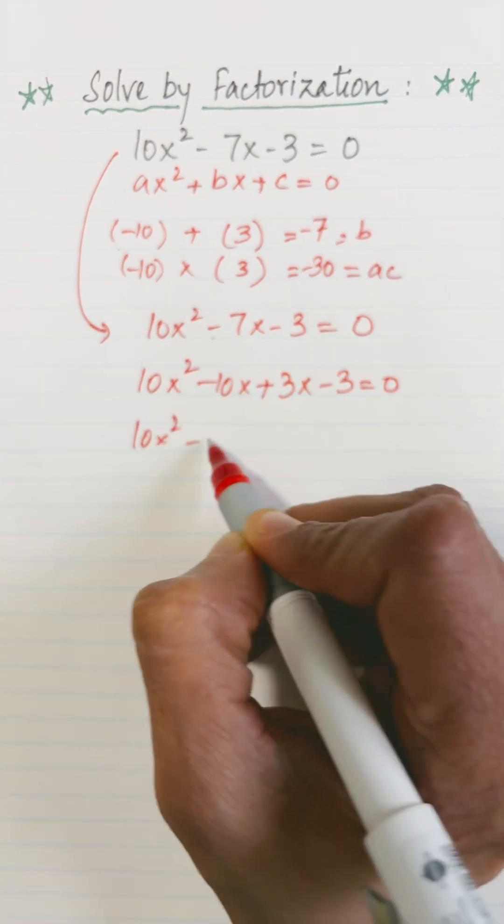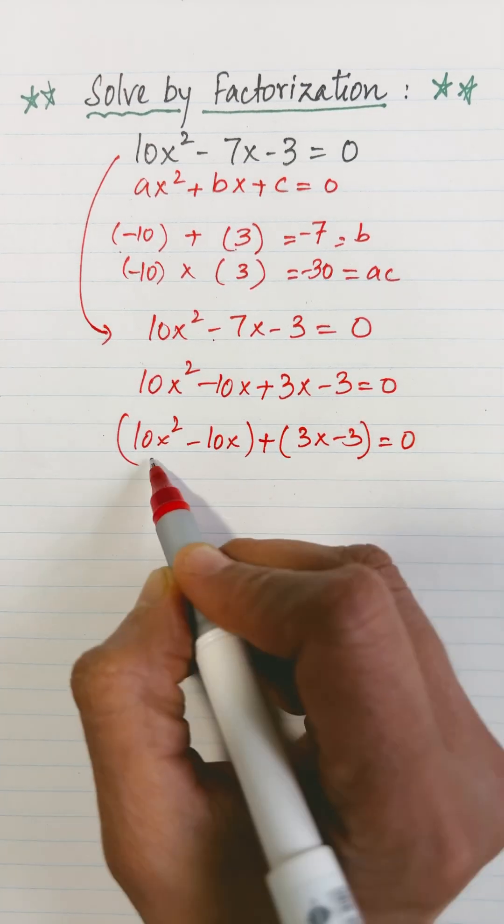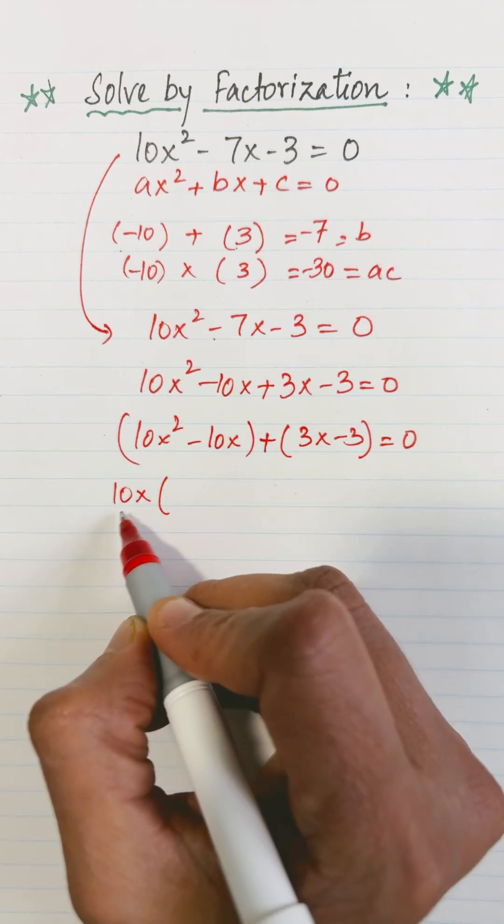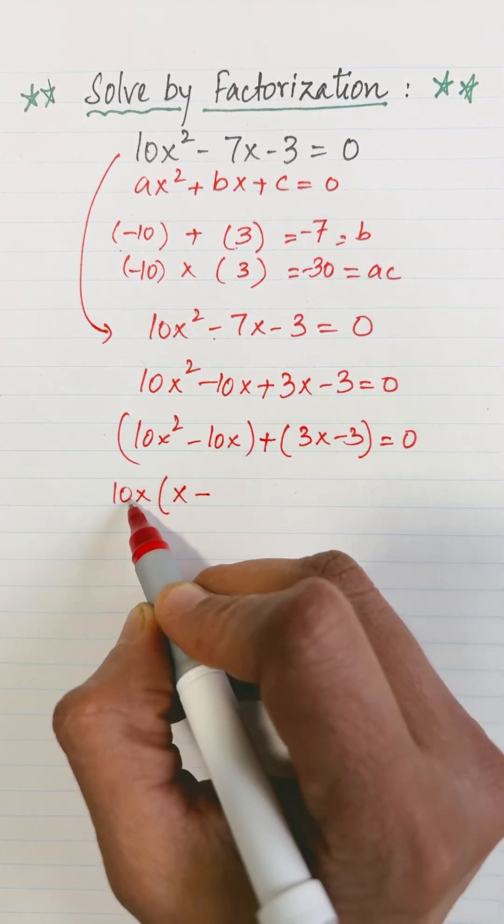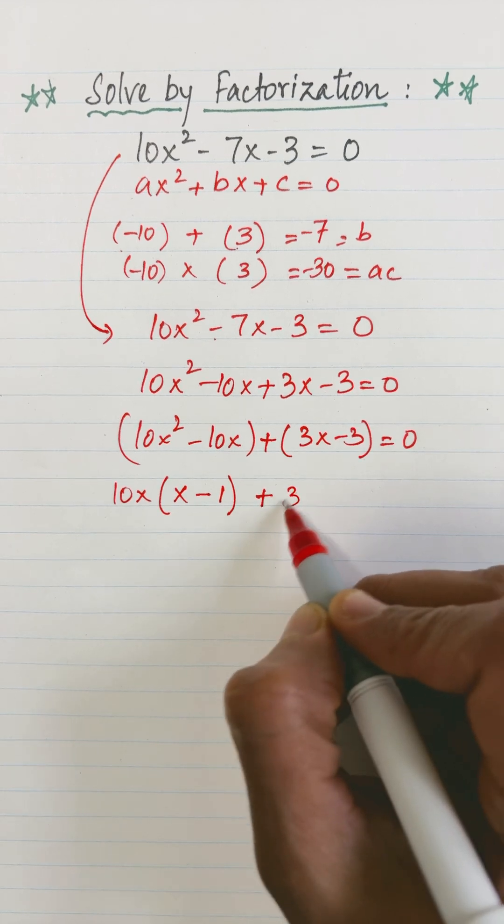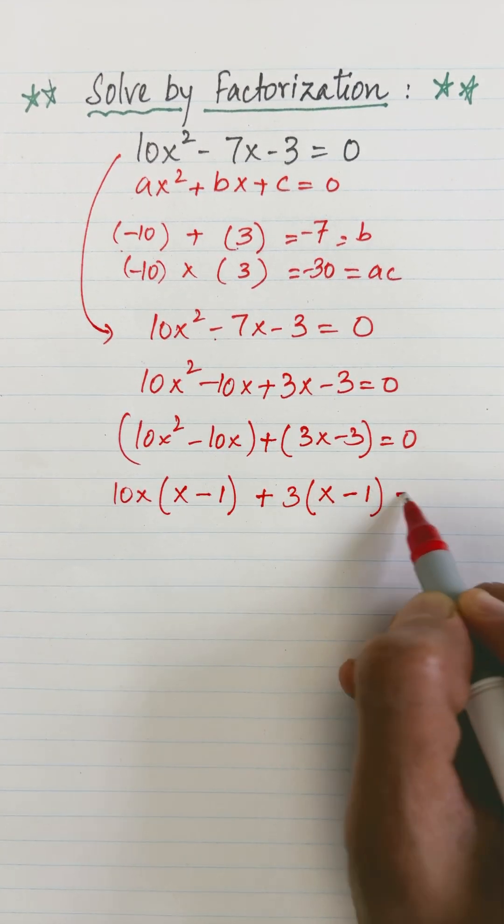Let's regroup the terms: (10x² - 10x) + (3x - 3). The common factor of 10x² - 10x is 10x. 10x² divided by 10x is x, and -10x divided by 10x is -1. What is the common factor of these two terms? 3. So 3x divided by 3 is x, and -3 divided by 3 is -1.